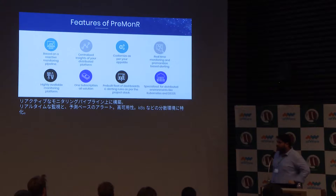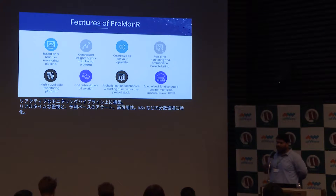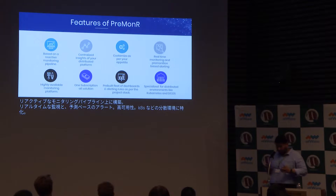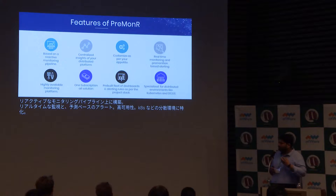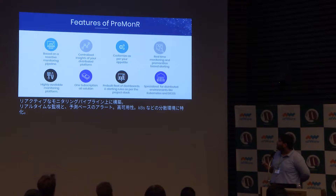Let's talk about some of the features Premonar provides. First, it's based on a reactive monitoring pipeline — all components and agents are highly available, and in case of failure there is a fail-safe mechanism where the agent is respawned or brought back into action. Then there's centralized insight of your distributed platform — for an enterprise project using components like Kafka, Cassandra, Lagom, and Elasticsearch, it's a single tool that compiles all the metrics and provides complete visibility of your system in one platform.